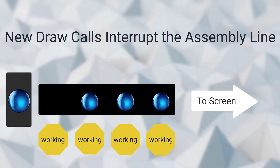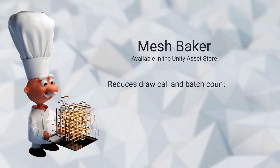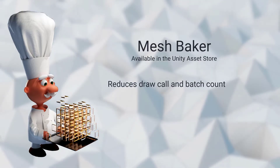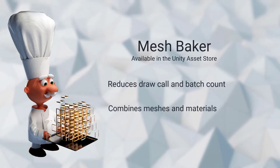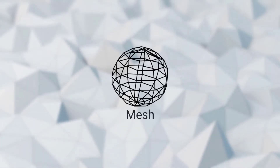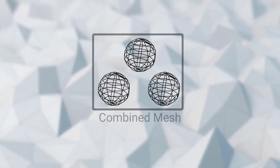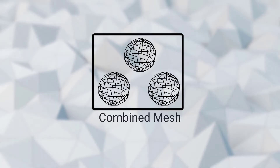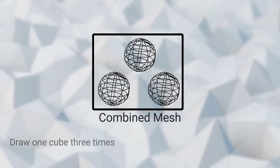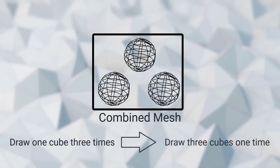This is where MeshBaker comes in. MeshBaker is a tool that reduces the number of draw calls and batches the GPU needs to render. It combines objects together and helps them share materials. A mesh defines what something looks like. We take many meshes that require a draw call each, and bake them together into one combined mesh that is drawn all at once. Rather than instructing the GPU to draw one cube three times, MeshBaker changes the instruction to draw three cubes one time.